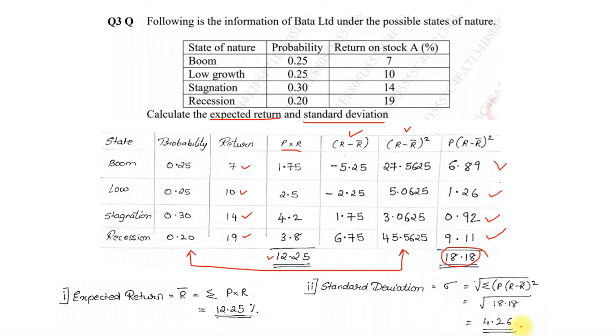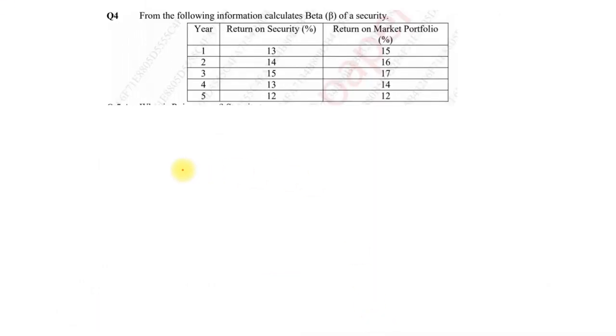Now let us check what was the other sum which was asked. Under question number 4, from the following information calculate the beta of a security. They are giving you return on security and return on market portfolio. So return on security we will consider this as RS and market return we will consider that as RM. First thing, let us see how to solve the columns. First we note the years, return on security and return on market portfolio.